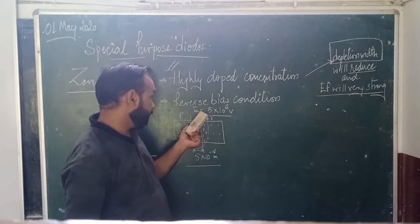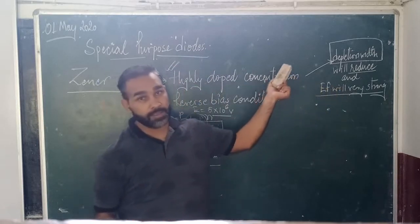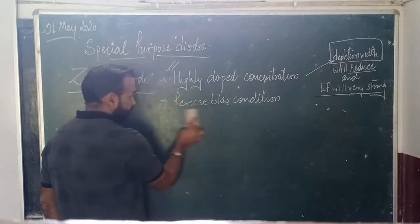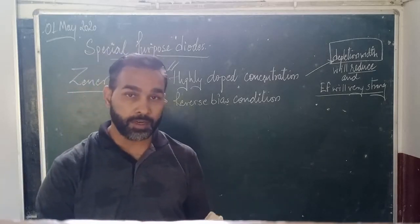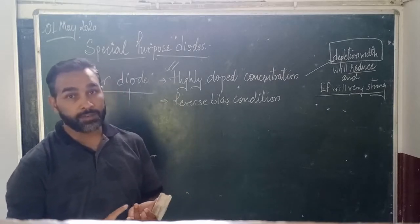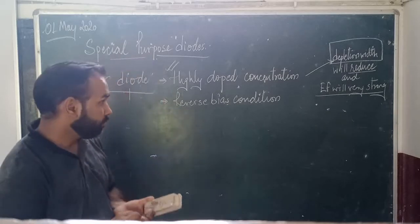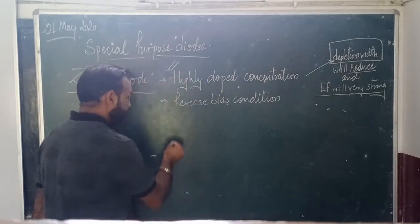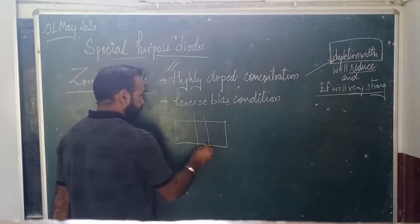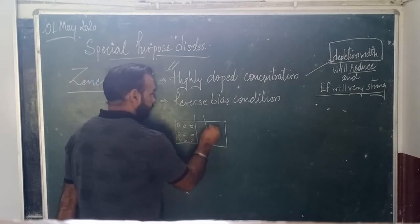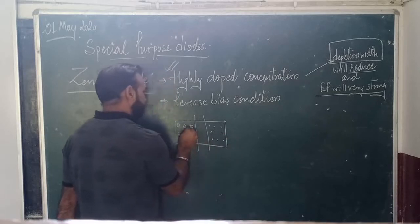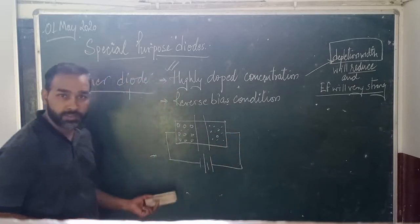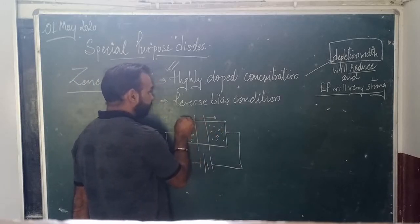The electric field strength is very high whereas the distance of the depletion layer is very low. The second important characteristic is that the zener diode always works in reverse bias condition. You have to remember which kind of bias is involved for each special purpose diode. In reverse bias, the depletion width was increasing as the reverse voltage was applied.